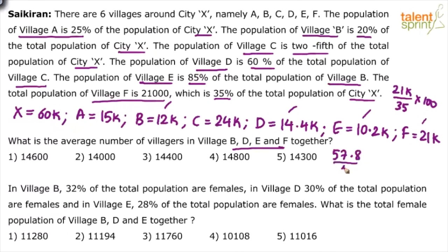57.8 divided by 4 — wait, let me correct that. The decimal parts are 0.4 and 0.2, so the sum should be 57.6, not 57.8. So 57.6 divided by 4: 56 divided by 4 is 14, and 1.6 divided by 4 is 0.4, giving us 14.4 thousand. The answer is option 3.